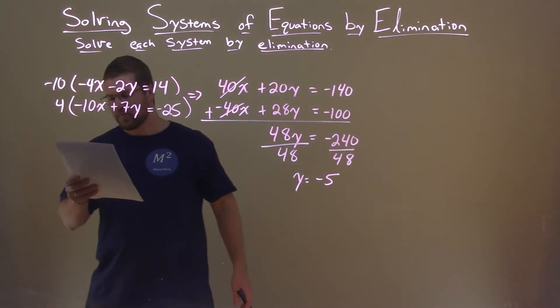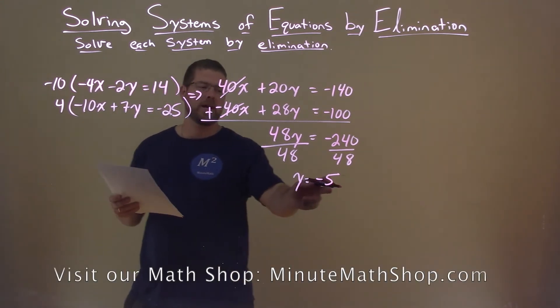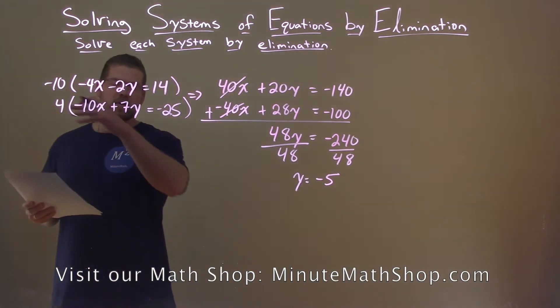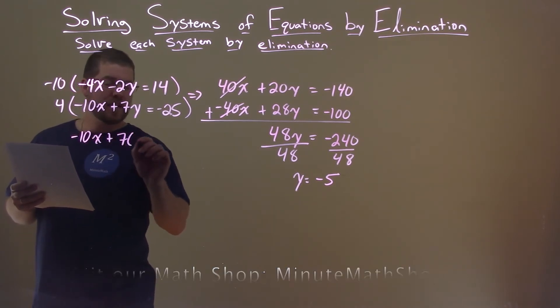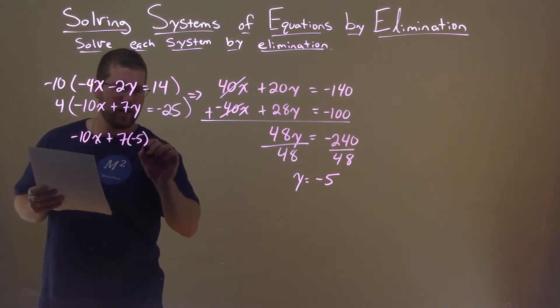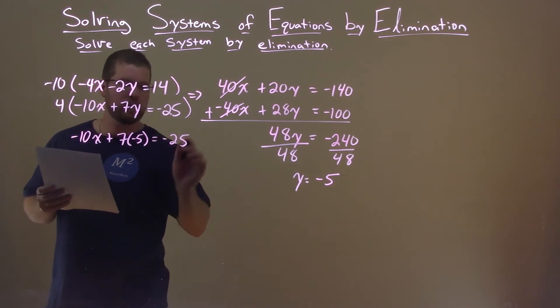We need to find our x value. We got to choose an equation and plug y equals negative 5 in for x. Let's choose a second equation. Negative 10x plus 7 times negative 5 for the y value equals negative 25.